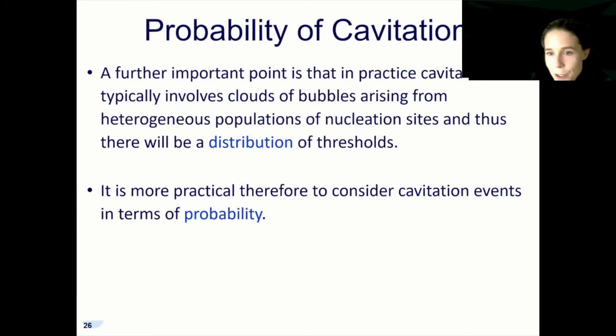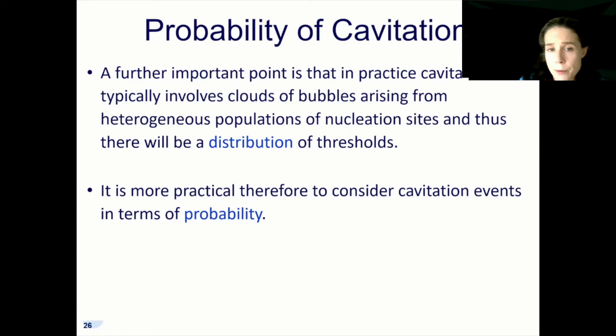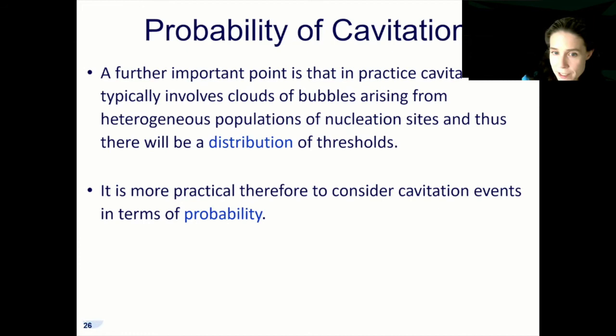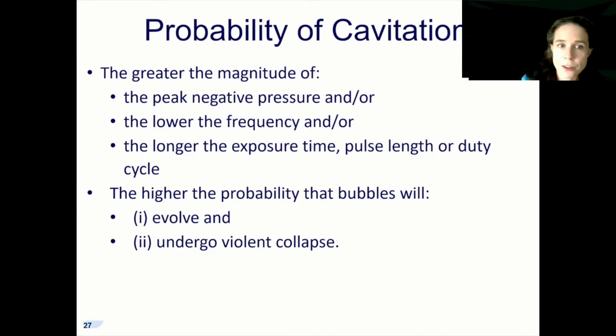So far we've only been talking about single bubbles, whereas in practice we're normally talking about a cloud of bubbles — either produced from nucleation sites pre-existing in the medium or where we've deliberately injected nuclei. As a result, because we'll have a range of different bubble sizes and a distribution of pressure depending on where we are in the medium, there will also be a distribution of thresholds and not every bubble will do the same thing at the same time. So it's more practical to consider cavitation events in terms of the probability of their occurring. The higher the peak negative pressure applied, the lower the frequency, and the longer the exposure time, the more likely we will both nucleate bubbles and have them collapse inertially.